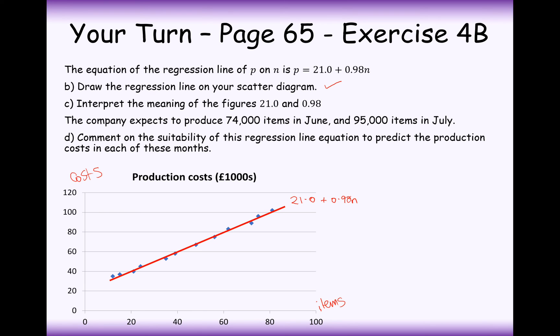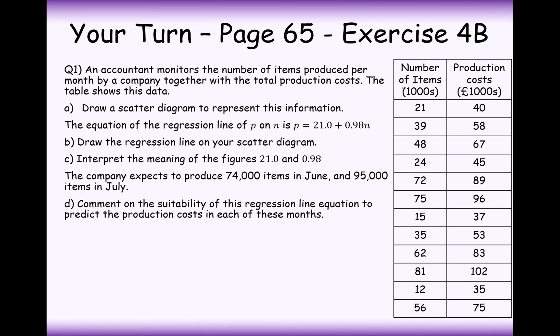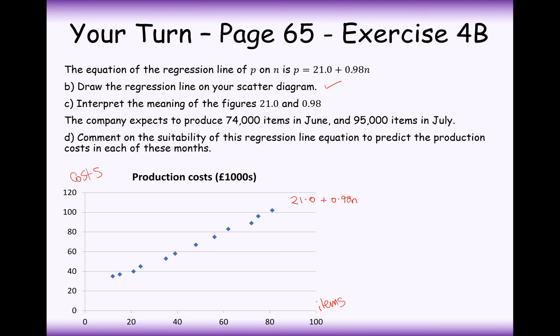Interpret the meaning of the figures 21.0 and 0.98. Well, 21.0 here is effectively, if we were to produce no items, we would have fixed costs of 21.0. That's £21,000 in terms of production costs. For the 0.98 figure here, for every thousand more products that we make, we're going to have £980 more production costs per thousand items that we produce. So make sure you check the units that we're working with here.